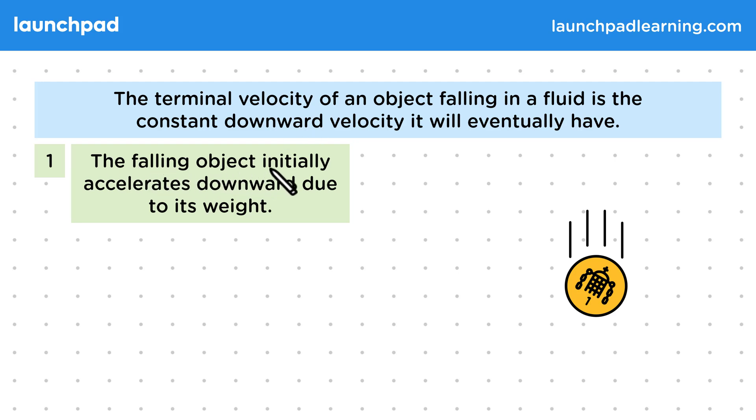First, the falling object initially accelerates downward due to its weight. Weight is a downward force due to the gravity of the Earth. If no other forces act then the coin will accelerate downwards because of this force. The acceleration of an object will always be in the direction of the resultant force acting on it.